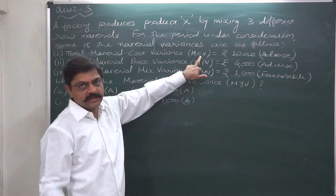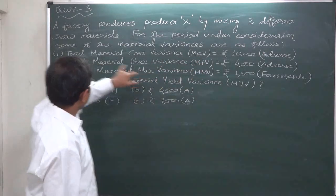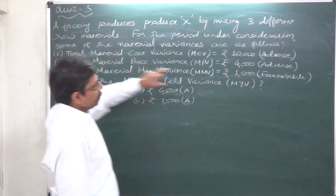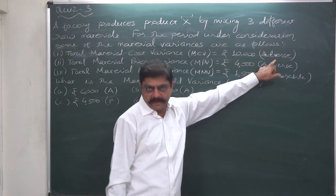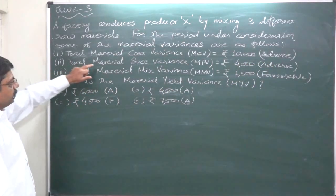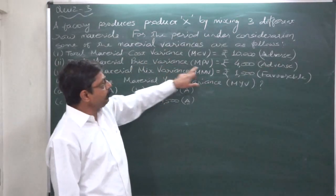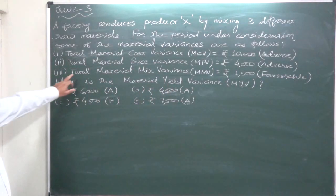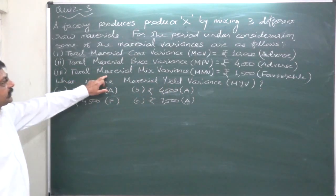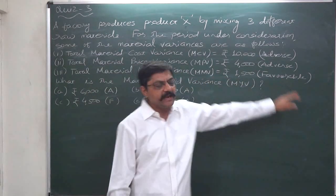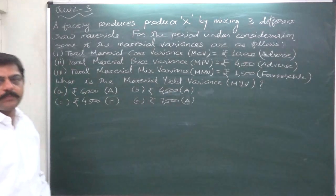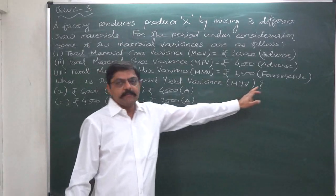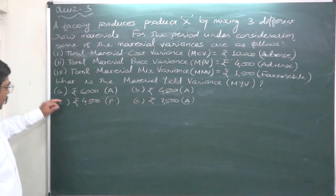Number one: total material cost variance (MCV) — because there are three raw materials, I prefer to use the term 'total' — is rupees 10,000 adverse, written numerically as minus 10,000. Number two: total material price variance (MPV) is rupees 4,000 adverse, written as minus 4,000. Number three: total material mix variance (MMV) is rupees 1,500 favorable, written as positive 1,500.